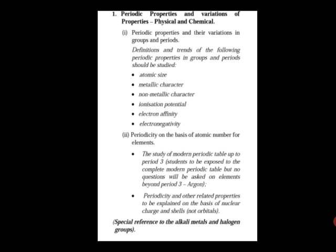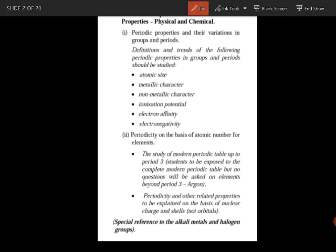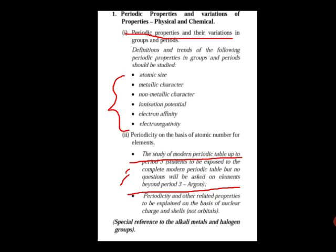The syllabus for Class 10 Chemistry, if you see properly, is periodic properties and their variation in the group. So altogether we have got six properties whose definition and trend we have to study. It is given there that the study of the modern periodic table up to Period 3. You will not get any question beyond argon, so this is a very important factor to understand. Now let's begin with the first topic, that is atomic size.